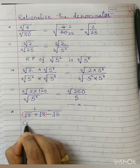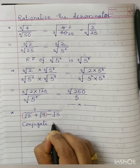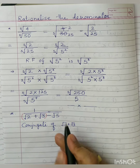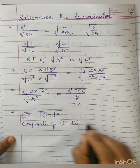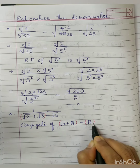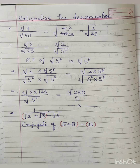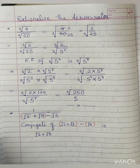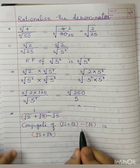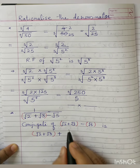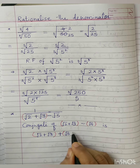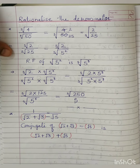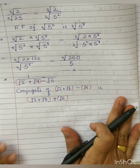So we are going to find the conjugate of: (root 2 plus root 3), which is our first term, minus root 5, which is our second term. The conjugate differs only in the sign between the two terms. So the conjugate of this expression will be root 2 plus root 3 as it is — our first term — and in place of the minus sign, we take plus root 5. Bracketing the terms always helps you simplify the question very easily.